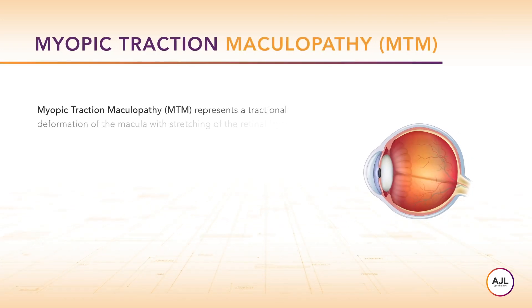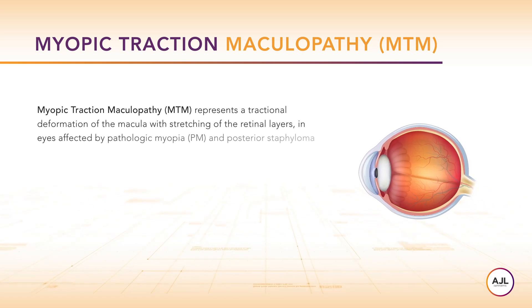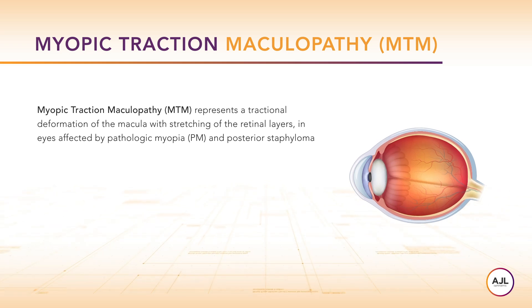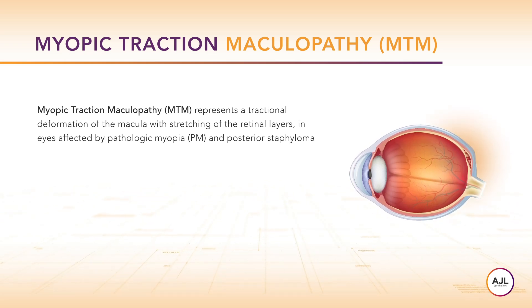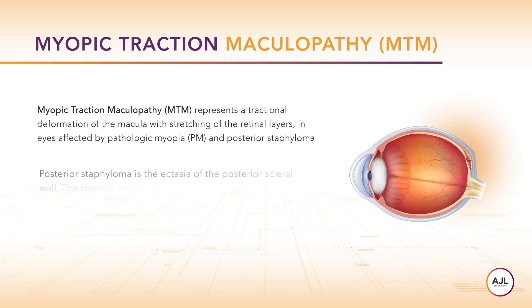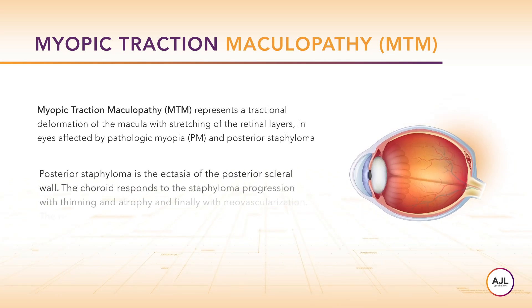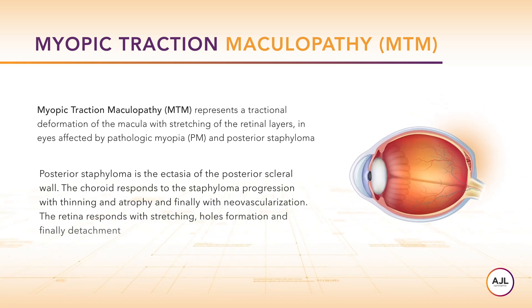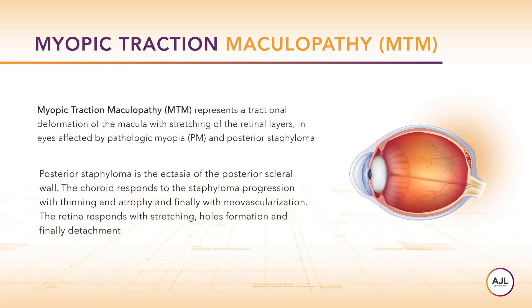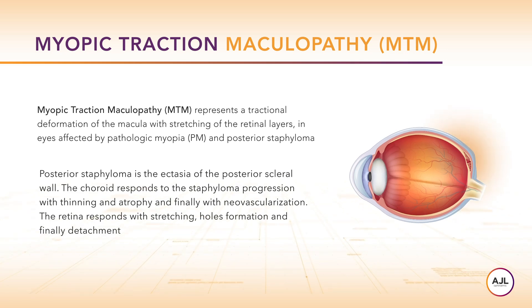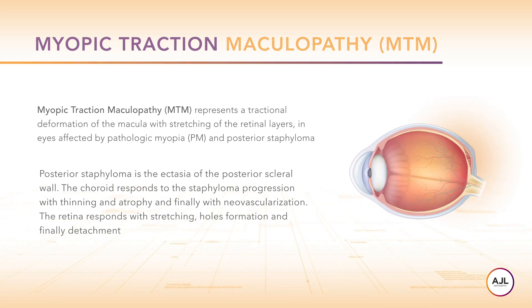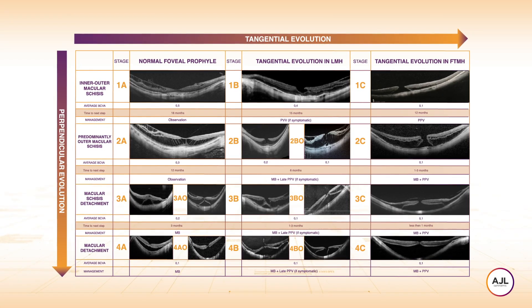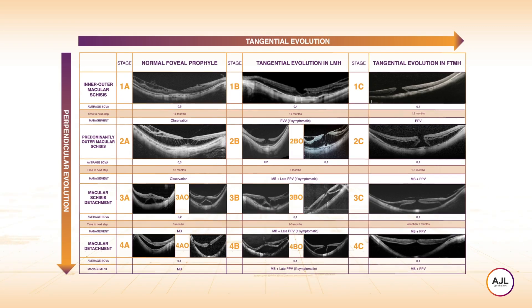Myopic traction maculopathy (MTM) represents a tractional deformation of the macula with stretching of the retinal layers in eyes affected by pathologic myopia and posterior staphyloma. Posterior staphyloma is the ectasia of the posterior scleral wall. The choroid responds to staphyloma progression with thinning, atrophy, and finally neovascularization. The retina responds with stretching, hole formation, and finally detachment. MTM is a slowly evolving disease that can evolve from stage 1 to stage 4, or from stage A to stage C.